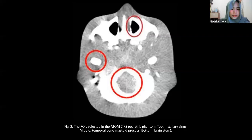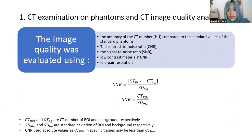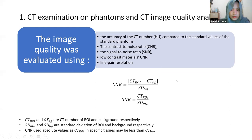There are three analyses in this study. The first is CT examination on phantoms and CT image quality analysis. Two phantoms are used, and image quality was evaluated using five parameters: the accuracy of CT number (HU) compared to the standard phantom value; contrast-to-noise ratio (CNR); signal-to-noise ratio (SNR); low contrast material CNR; and line pair resolution. CNR and SNR can be calculated using the equations shown on screen.